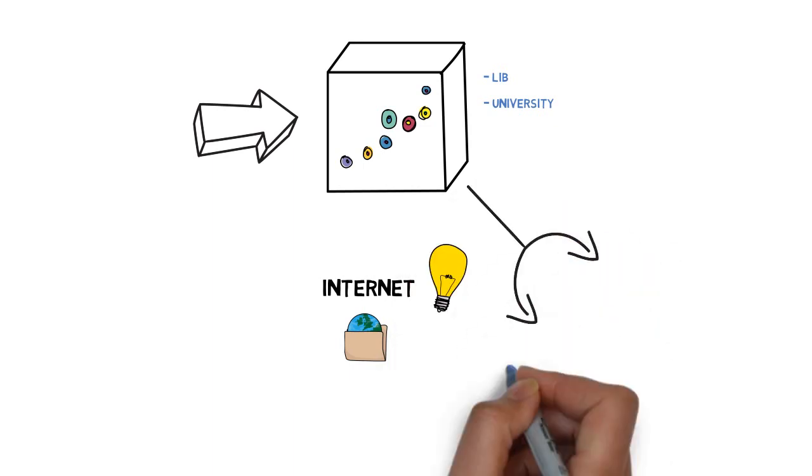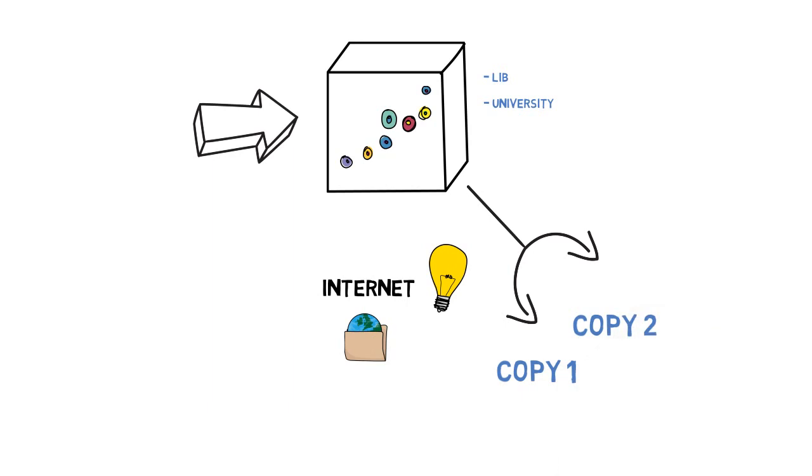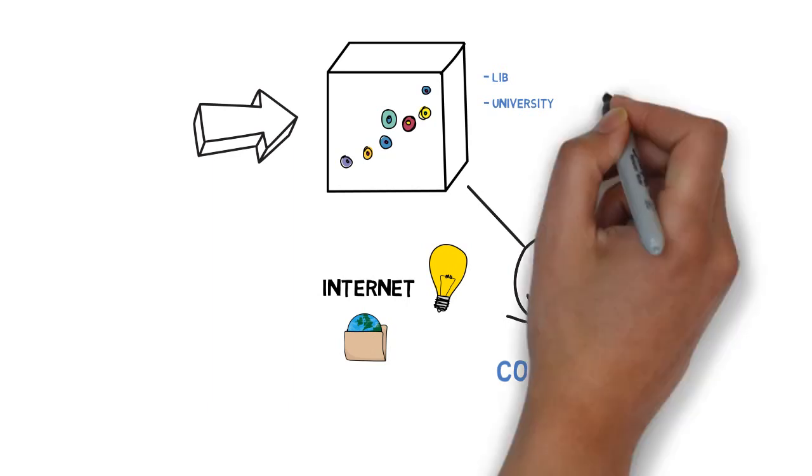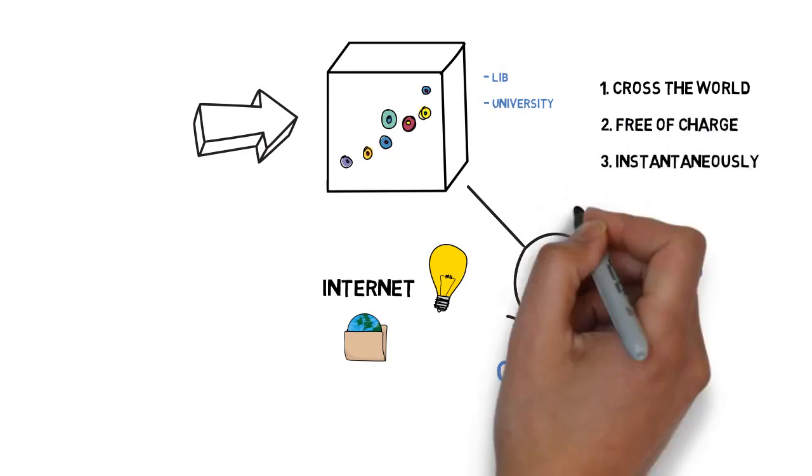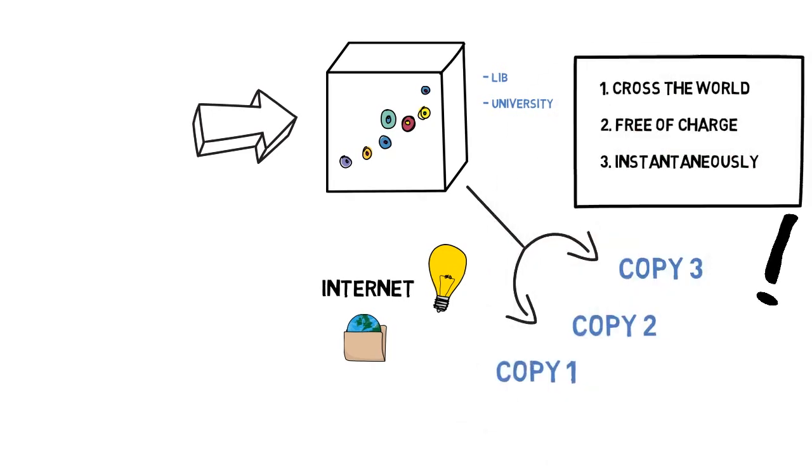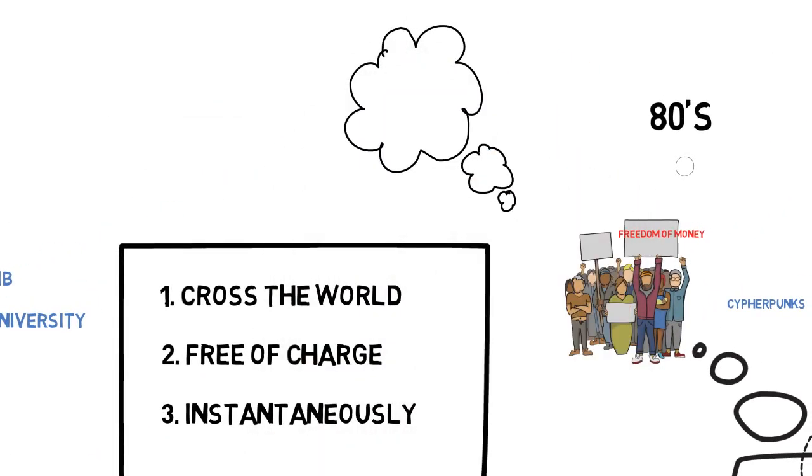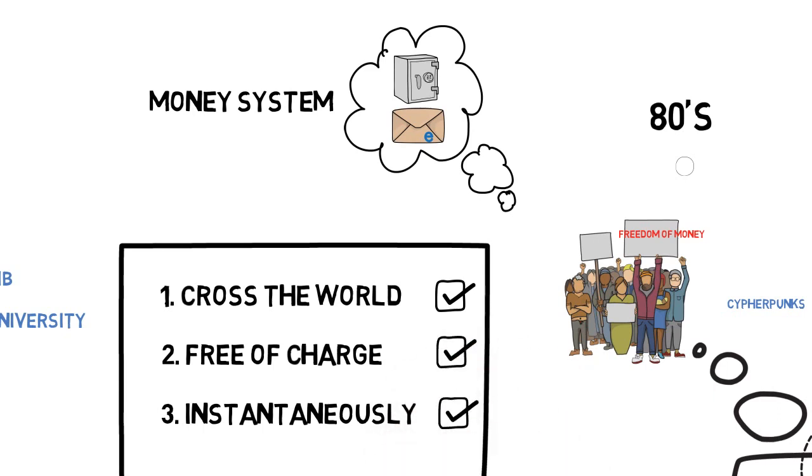What I can do now is I can convey the information from one spot to another all across the world free of charge and instantaneously. How cool is that? Then cypherpunks started to think, wait a minute. Can we create a money system sitting on top of the internet with all its great features, so that we can convey value from one spot to another all across the world free of charge and instantaneously? This sounds like a natural continuation from the internet concept.